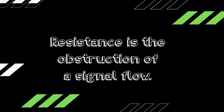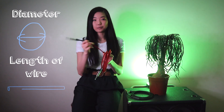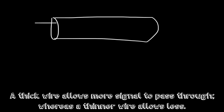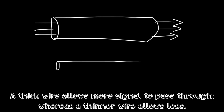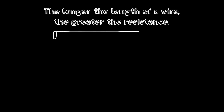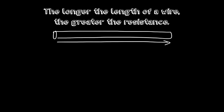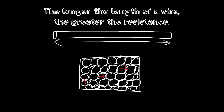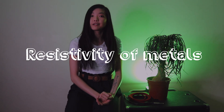The first component is resistance — the obstruction of signal flow. A thick wire allows more signal to pass through, whereas a thinner wire allows less. Also, the longer the wire, the greater the resistance, because there are more collisions of flowing electrons in the metal — basically they lose more energy.